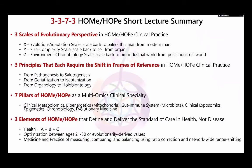Here's our short lecture summary — the 3-3-7-3 framework. The three scales of evolutionary perspective: the evolution-adaptation scale, scaling back to Paleolithic man from modern man; the size-complexity scale, scaling back from the cell to the organ; and the environment-chronobiology scale, scaling back to the pre-industrial world from the post-industrial world. The three principles each require a shift in frame of reference: from pathogenesis to cell-to-genesis, eritrization to neotenization, organology to holobiontology. Seven pillars of HOM Hope. And the three elements of HOM Hope — health equals A plus B plus C — with optimization targeting ages 21 to 30 or evolutionarily derived values, and medicine in practice of measuring, comparing, and balancing using ratio correction and network-wide range shifting.